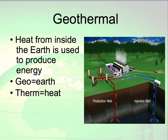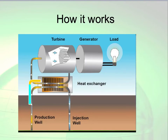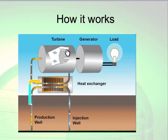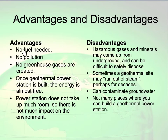Geothermal is an alternative source of energy, not a renewable source. 'Geo' means earth and 'therm' means heat, so we are using the heat from the earth to produce energy. Water goes down into a pipe into the earth to get heated up, then the heated water comes back up. Heat exchange takes place, and then a turbine generates electricity. Advantages: no pollution, no fuel needed, no greenhouse gases. Disadvantages: they can only be built in certain places, hazardous gases and minerals can come up from underground, and they can contaminate groundwater.